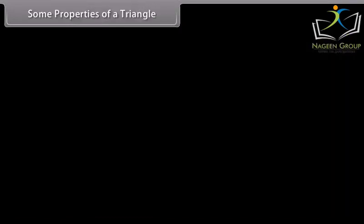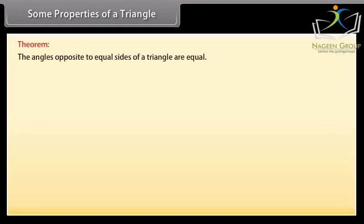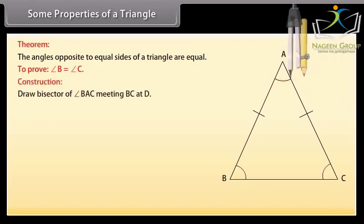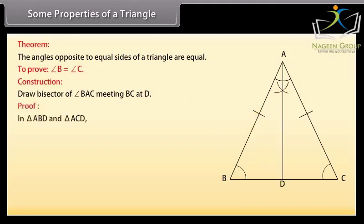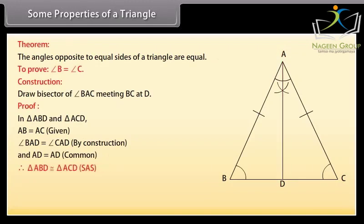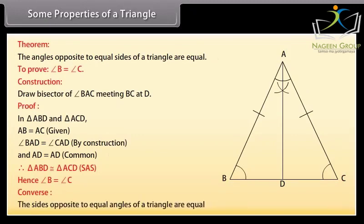Some properties of a triangle. Theorem: the angles opposite to equal sides of a triangle are equal. Given is a triangle ABC in which AB is equal to AC. We have to prove that angle B is equal to angle C. Construction: draw the bisector of angle BAC meeting BC at D. Proof: in triangle ABD and triangle ACD, AB is equal to AC (given), angle BAD is equal to angle CAD (by construction), and AD is equal to AD (common). Therefore, by SAS rule, triangle ABD is congruent to triangle ACD. Hence, angle B is equal to angle C. The converse is also true: sides opposite to equal angles of a triangle are equal.